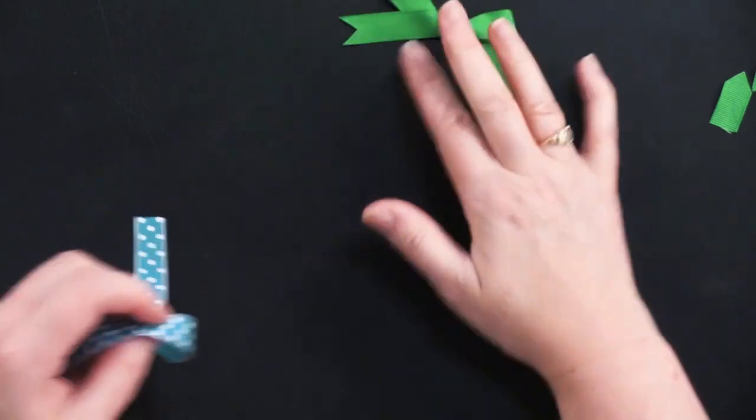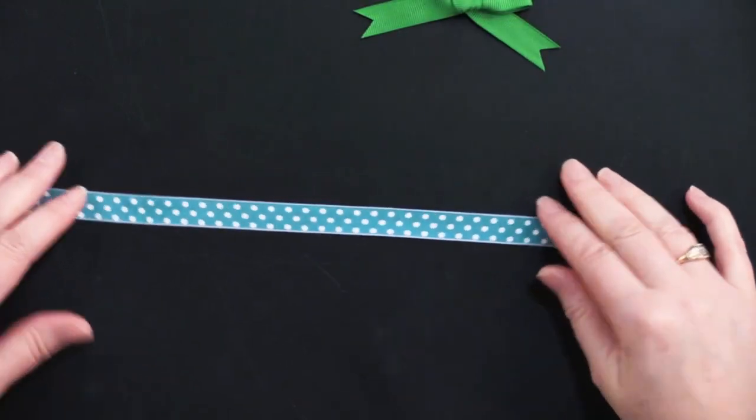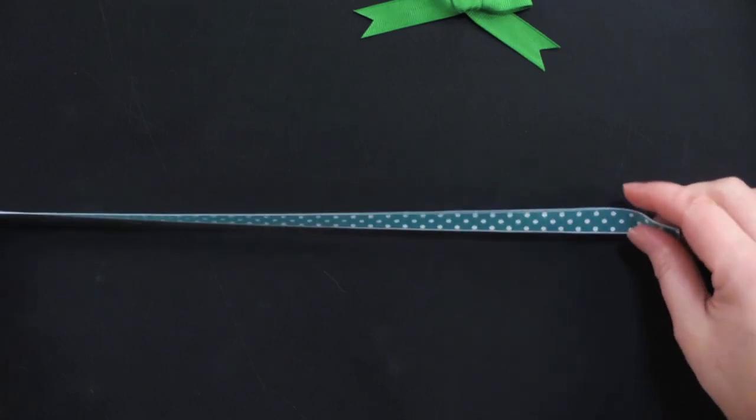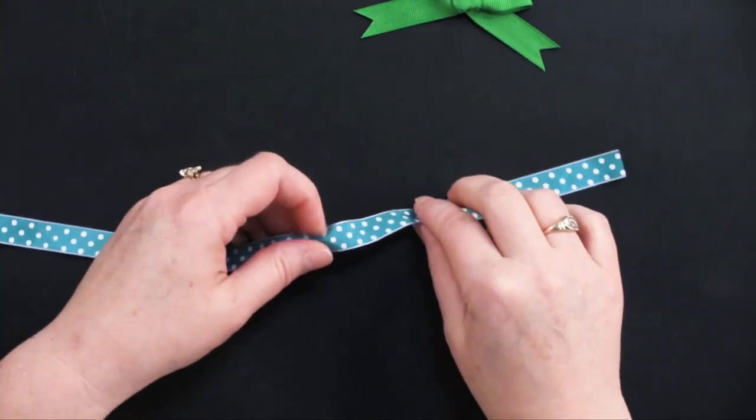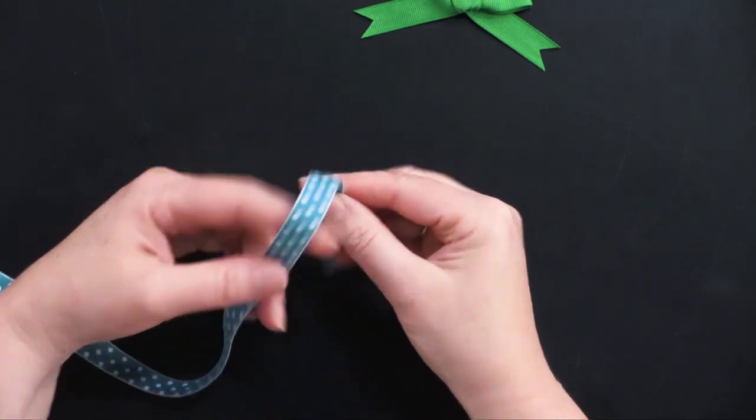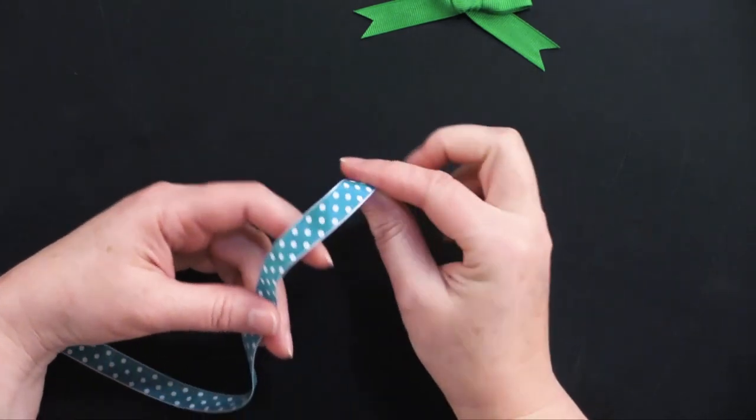Now let's take another example of a different kind of ribbon. This is the same width but it's single-sided pattern. So we're going to accommodate for that. We're going to make the bow in the same way. We're leaving about an inch and a half to two inch tail.